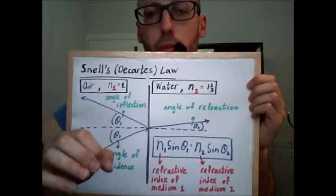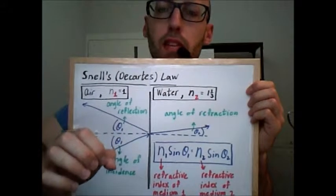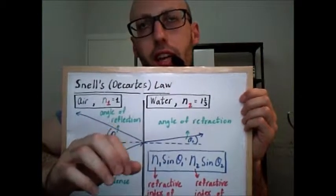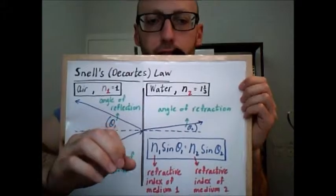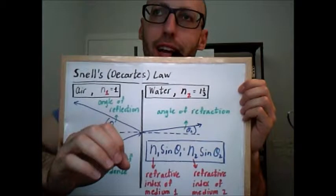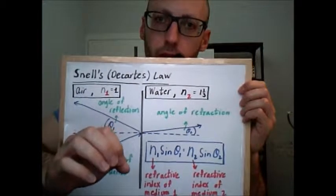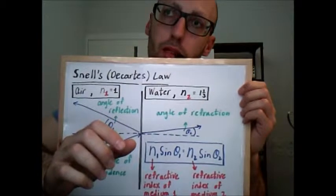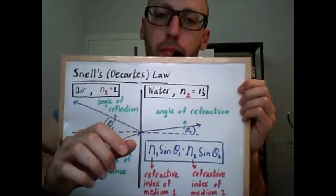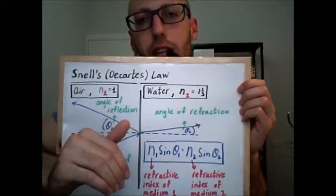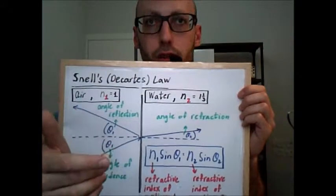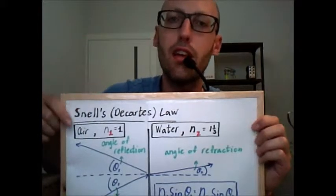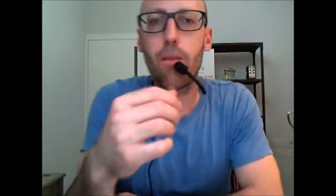It describes the ratio between the speed of light in vacuum, which roughly equals 300 million meters per second, divided by the speed of light in the medium. And so you might ask, what? What does the medium do to the speed of light?